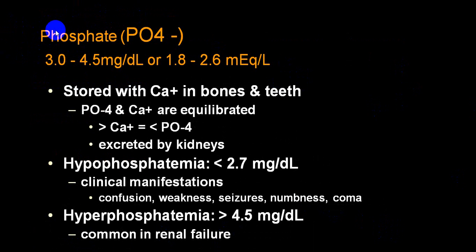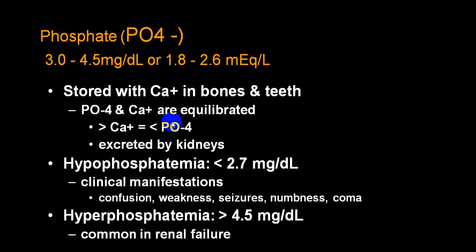As far as phosphate level is concerned, the average is 3 to 4.5 milligram per deciliter. Phosphate is stored with calcium in bone as calcium phosphates. If your phosphate level becomes less than 2.7 in blood, we call it hypophosphatemia, and if it becomes more than 4.5, we call it hyperphosphatemia. Hyperphosphatemia is very common with CKD.